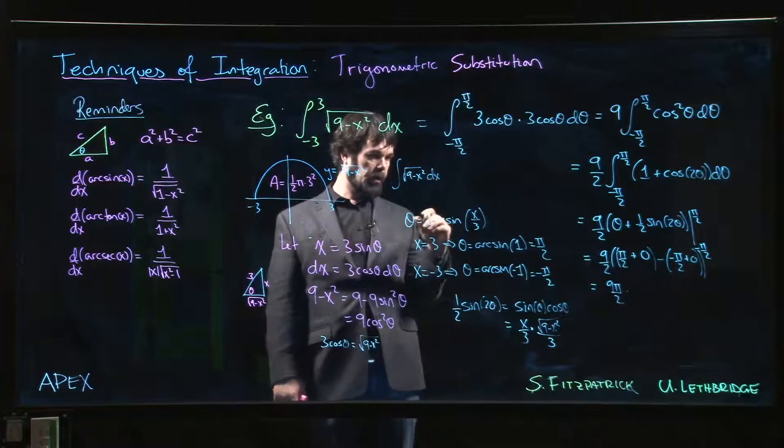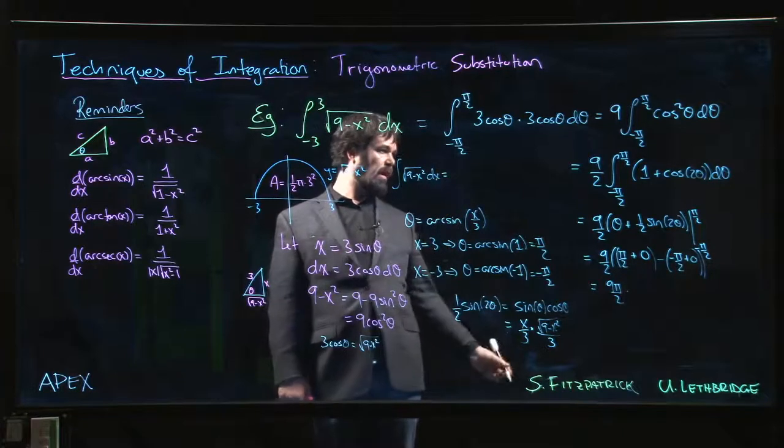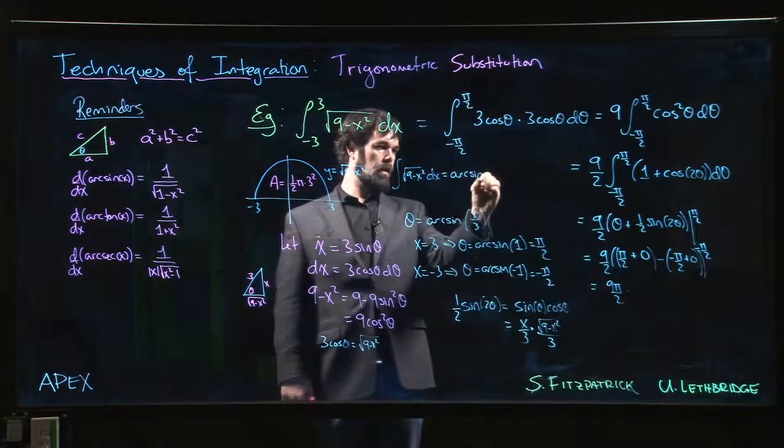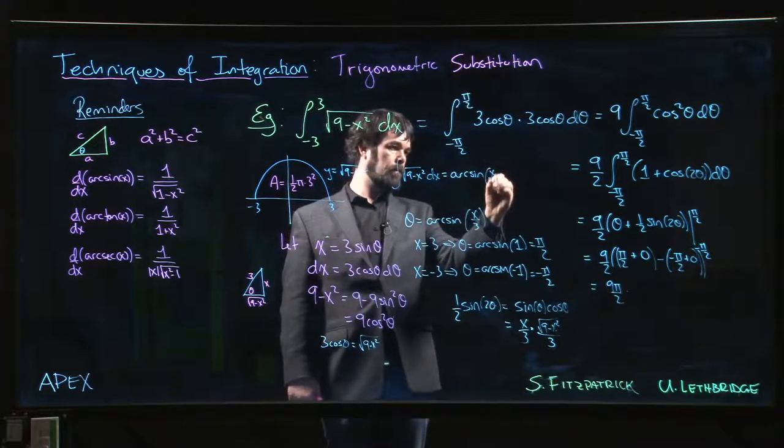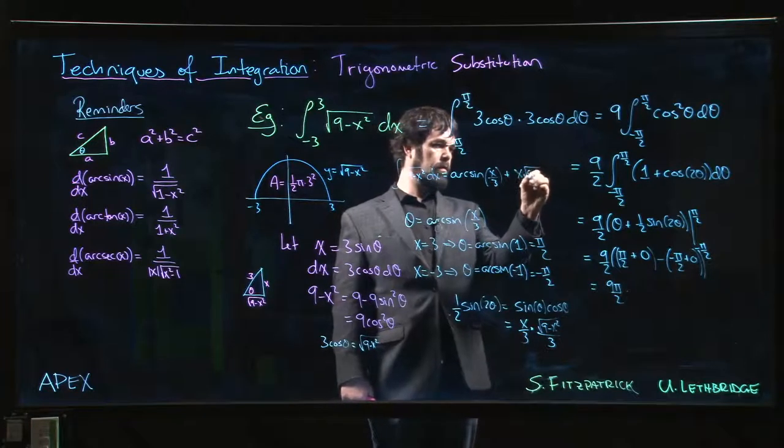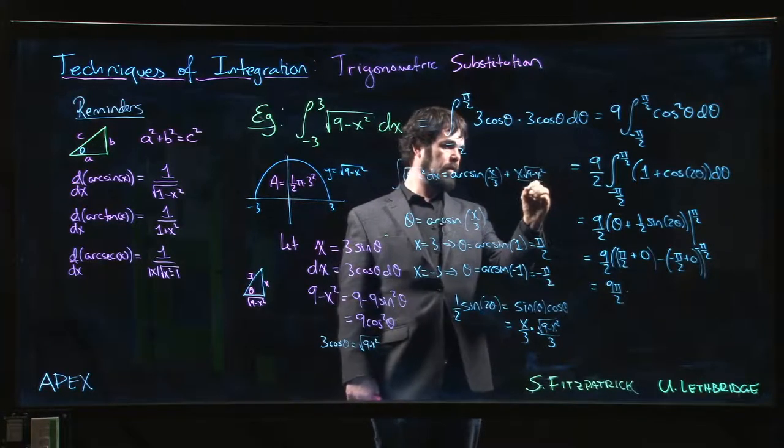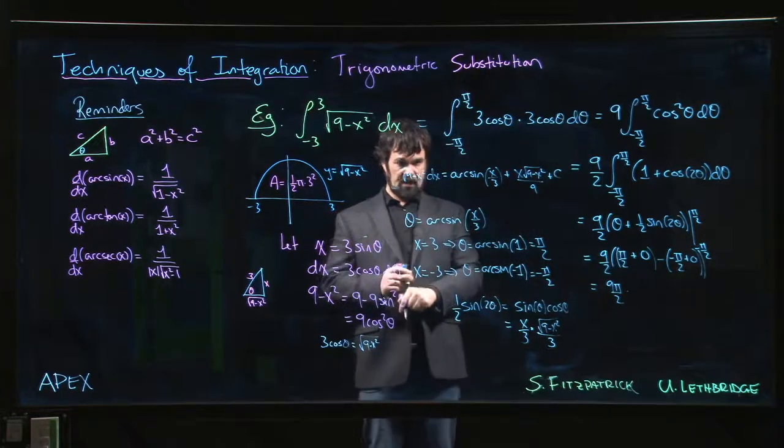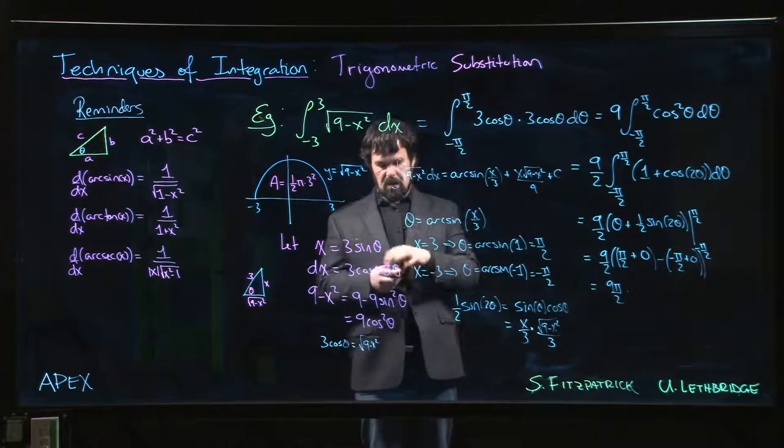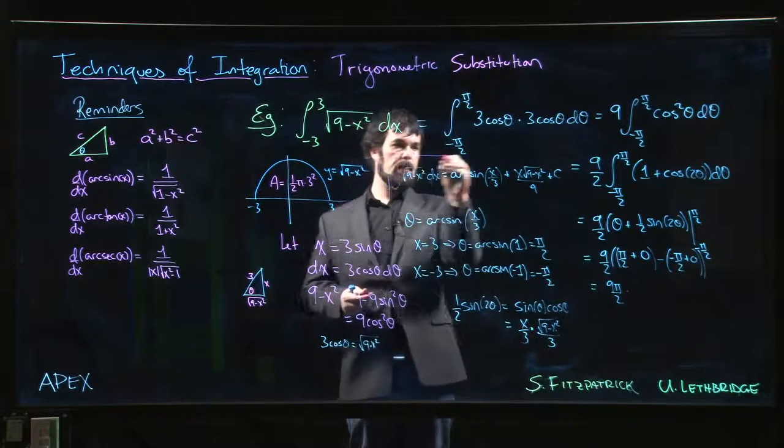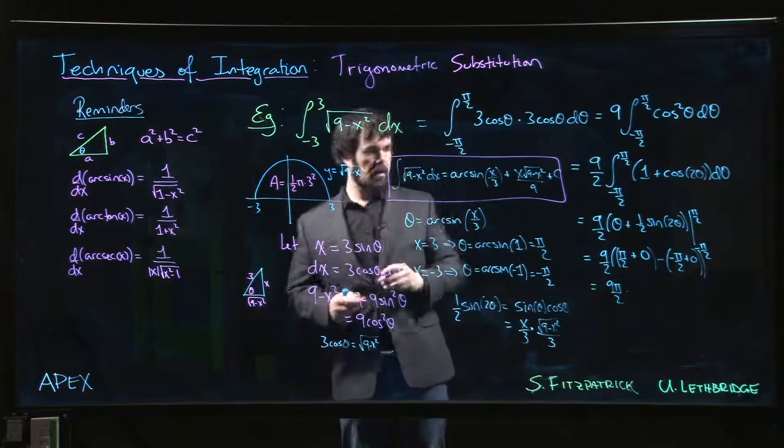So if we were doing the indefinite integral, it's actually more work. Because we get arc sine x over 3 plus x root 9 minus x squared over 9. That's the indefinite integral. And then you'd still have to plug in your limits, your 3 and your minus 3.